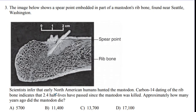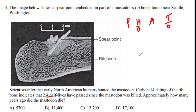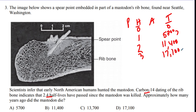Question three: carbon-14 dating of a mastodon rib bone indicates that 2.4 half-lives have passed. How many years ago did the mastodon die? Setting up a PHAT chart: one half-life = 5,700 years; two half-lives = 11,400 years; three half-lives = 17,100 years. Since 2.4 is between 2 and 3, the answer falls between 11,400 and 17,100 years, so the answer is C.